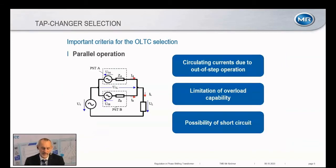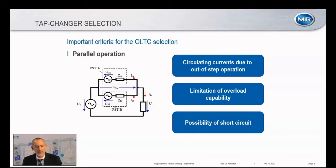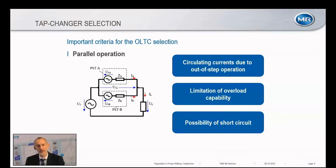It is very important to clarify all these issues up front. Another important consideration is parallel operation: phase shifting transformers are quite often operated in parallel. The OLTC is not always operated synchronously on both units — there will always be a time delay. This creates a circulating current between the phase shifting transformers, which adds to the load current. While this may not be a major thermal issue for short periods, the on-load tap changer must be able to handle this circulating current.